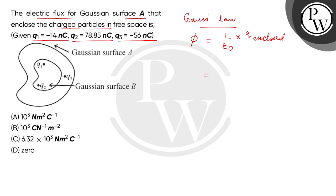We will put in the value of epsilon naught in the denominator, and here it is 8.85 multiplied by 10 to the power minus 12 in SI units. And for Q enclosed, we will sum up the charges: minus 14 plus 78.85 minus 56.